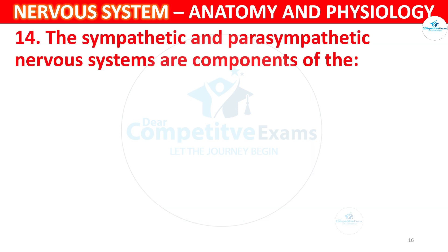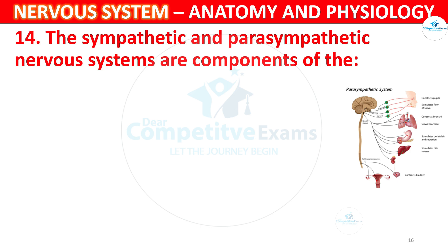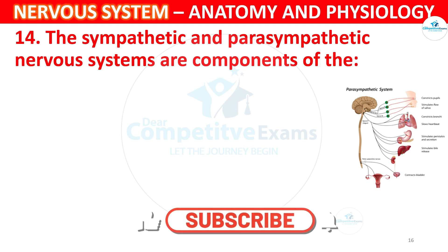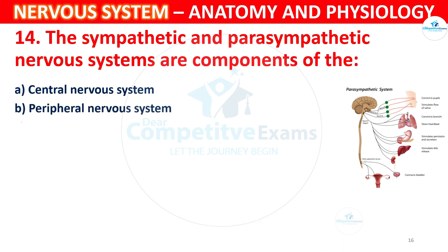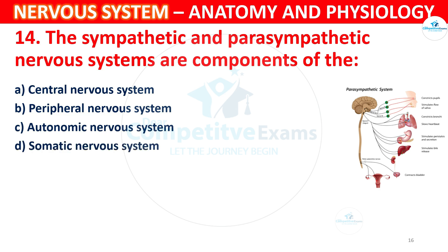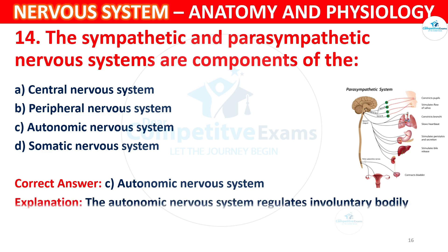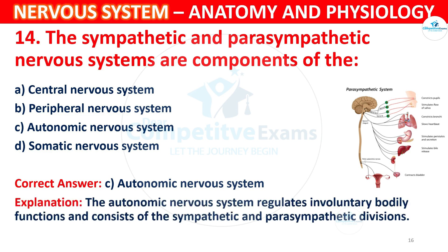Question 14: The sympathetic and parasympathetic nervous systems are components of which system? Options: A) Central nervous system, B) Peripheral nervous system, C) Autonomic nervous system, D) Somatic nervous system. The correct answer is C, Autonomic nervous system. The autonomic nervous system regulates involuntary bodily functions and consists of sympathetic and parasympathetic divisions.